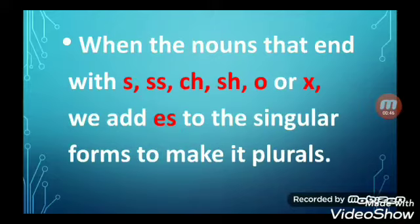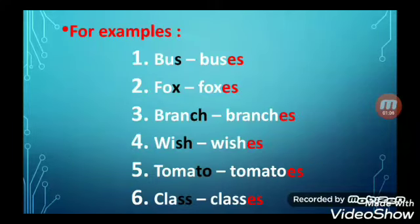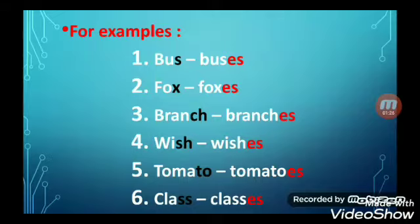When the noun ends with S, double S, CH, SH, O or X, we add ES to the singular form to make it plural. For example: bus→buses, fox→foxes, branch→branches, wish→wishes, tomato→tomatoes, class→classes. The given words end with S, X, CH, SH, O and double S, so we have added ES to make them plural.